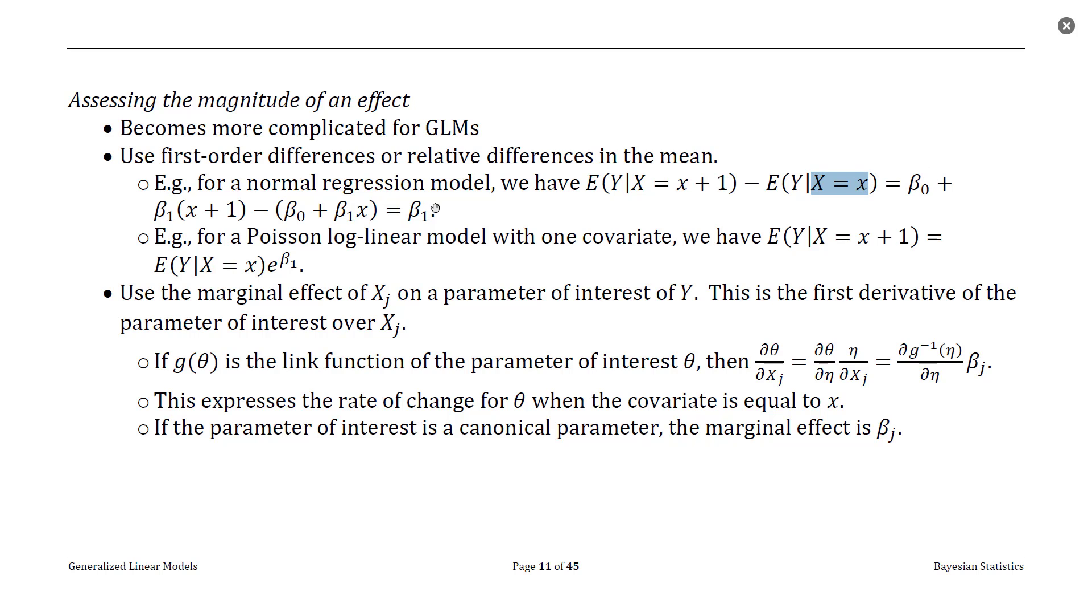We subtract from that the mean response when our predictor x is equal to x. And we do some mathematics and we get β1, our slope term.